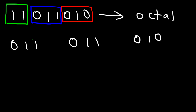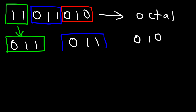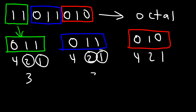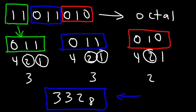So we have zero one one, then zero one one, and zero one zero. Let me color code it so you can see which group matches which. With place values four two one, for the first group we add two and one, giving three. The second group also gives three. The last group only has a two, giving two. So our answer is three three two, or 332 in the octal system. That's a simple way to convert a binary number into an octal number.